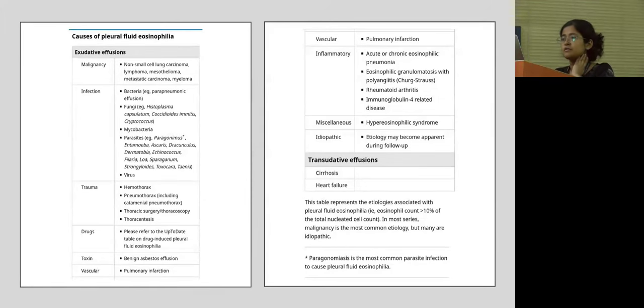There are certain drugs that have been associated with pleural fluid eosinophilia. Notably, the most common drugs are sulfasalazine, propylthiouracil, and warfarin, which are the notable drugs for drug-induced pleural fluid eosinophilia. Toxins, benign asbestos effusion is a cause. Vascular such as pulmonary infarction, but those patients would have some other systemic features such as hemoptysis as well. Inflammatory causes such as acute or chronic eosinophilic pneumonia, Churg-Strauss syndrome, rheumatoid arthritis are also known to cause pleural fluid eosinophilia. These were all the exudative effusions that were known to cause pleural fluid eosinophilia. Other causes, transudative causes such as cirrhosis and heart failure, but they are much lower down on the list.